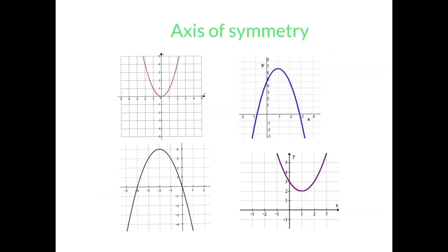The last part of the parabola we're going to talk about today is the axis of symmetry — that imaginary line that cuts the parabola in half. This is my vertex, so I know my axis of symmetry is going to touch the vertex. The axis of symmetry is a line, so we name it as a line. In this case, the axis of symmetry for this parabola is x equals zero.